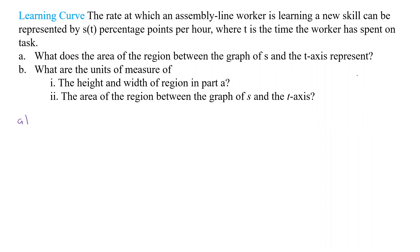So we don't know what the graph is. Let's say we have some function that looks like that. What we're looking at is this area within here. We're only starting at zero because we can't have negative hours that we've worked, so we're going to start there. And this is the area it's going to be.